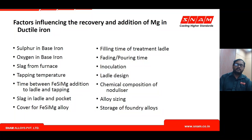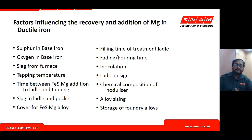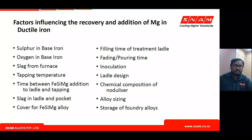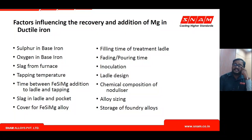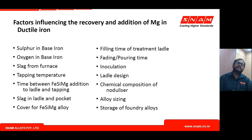Alloy selection and magnesium content in the alloy should be based on process variations. Controllable process variations should be addressed, and alloy sizing — the size distribution of the alloy — has a direct impact on dissolution of the ferro silicon magnesium alloy, which in turn determines how much magnesium is liberated into the liquid metal.